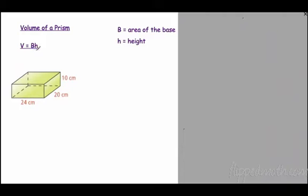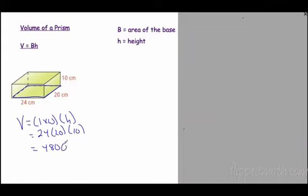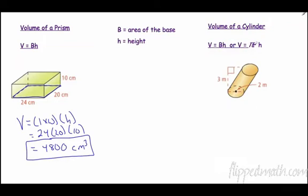The volume of a prism is B times h, where big B is the area of the base — that changes depending on the shape of the base — and h is the height, which is the distance between the two bases. For this rectangle, the formula is length times width times height: 24 times 20 times 10, which gives us 4,800 cubic centimeters.